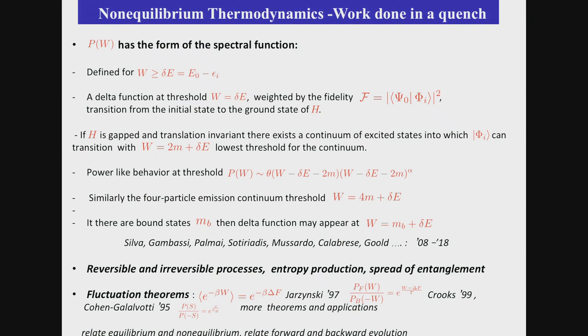Similarly, when we have four particles, we'll have another threshold with another critical exponent. If we have bound states, we'll be able to transition to poles that correspond to these bound states, and they will appear again in the distribution function. So a lot of work was done, particularly here at SISSA, started by Silva, Gambassi, Palmai, Sotiriadis, Mussardo, Calabrese, Goold. A lot of people worked and understood much of this. And there are many, many other questions.